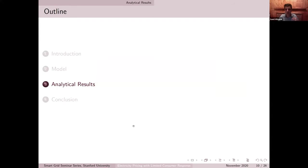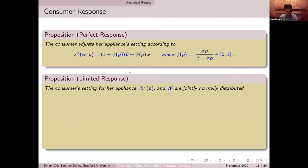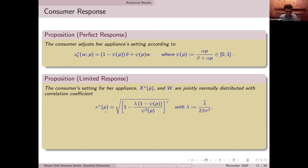Luckily, we are able to fully characterize the optimal solution of the consumer in the presence of these cognitive limitations. Let me remind you of the perfectly responsive case — this was the optimal solution when lambda is zero, where I can re-optimize at any moment. In the presence of lambda, representing our cost of processing information, the consumer's appliance setting X star and the random variable W representing the ambient environment follows a jointly normal distribution with a given correlation coefficient. This is going to be the mean of my setting and this is going to be the standard deviation.